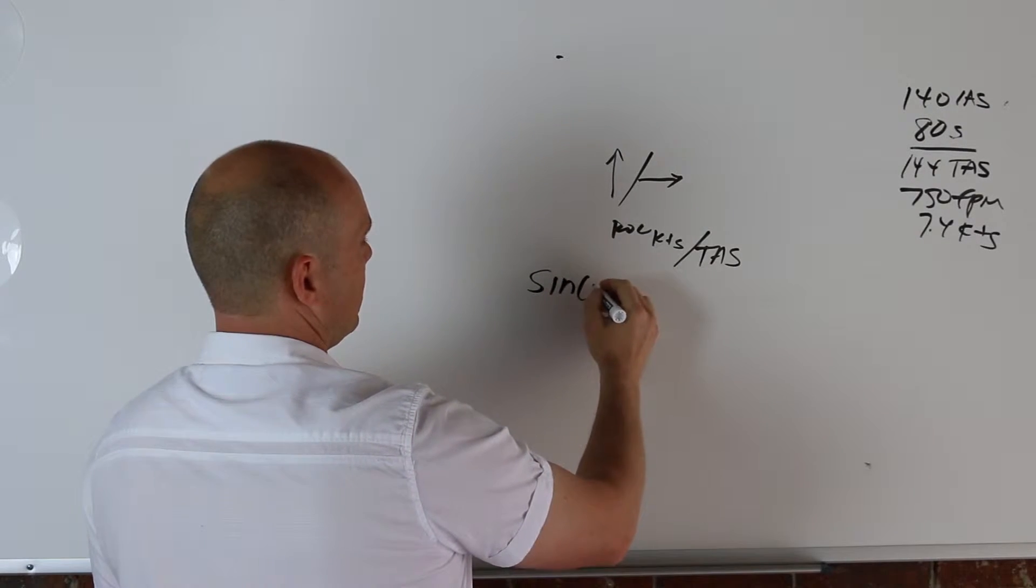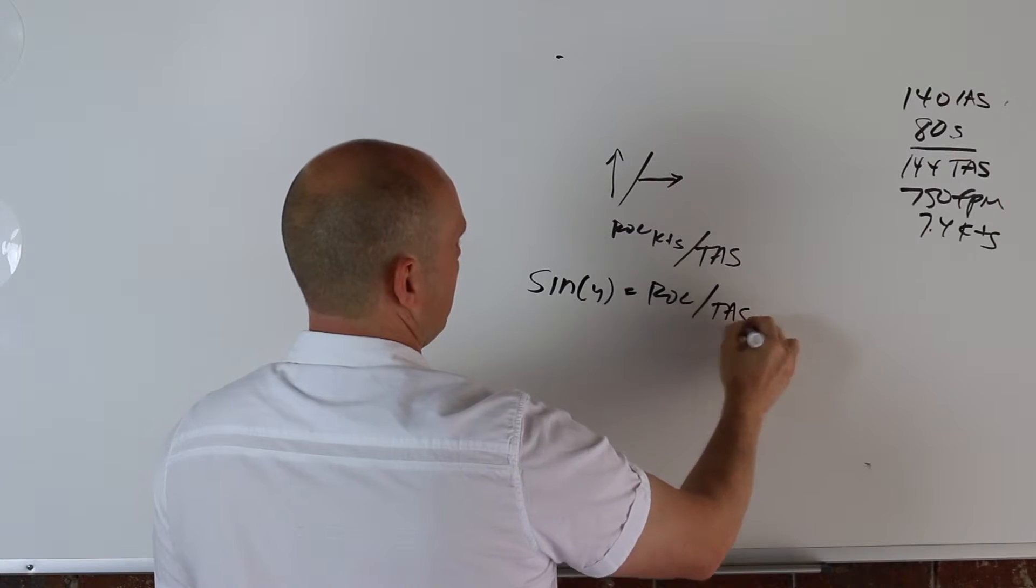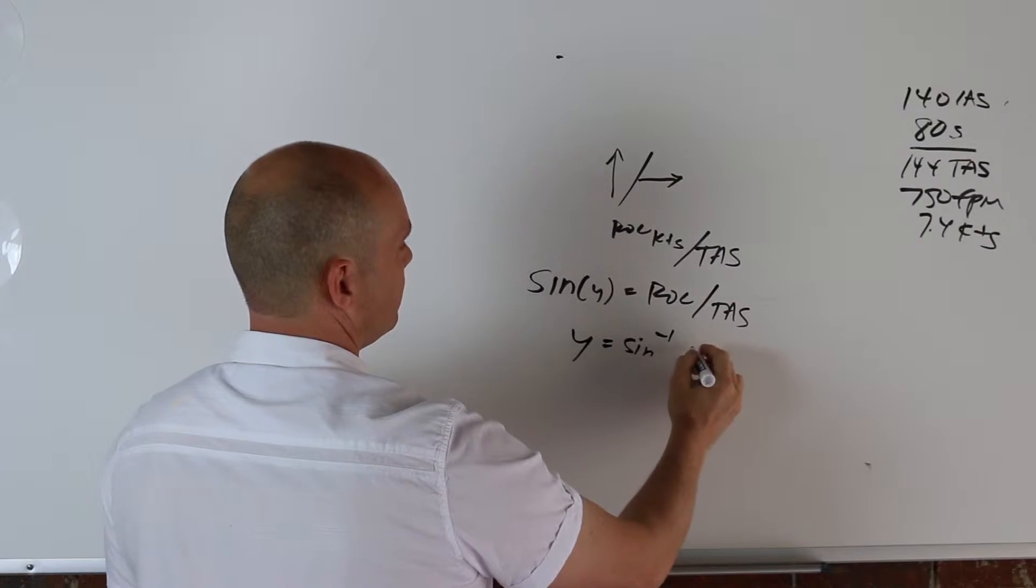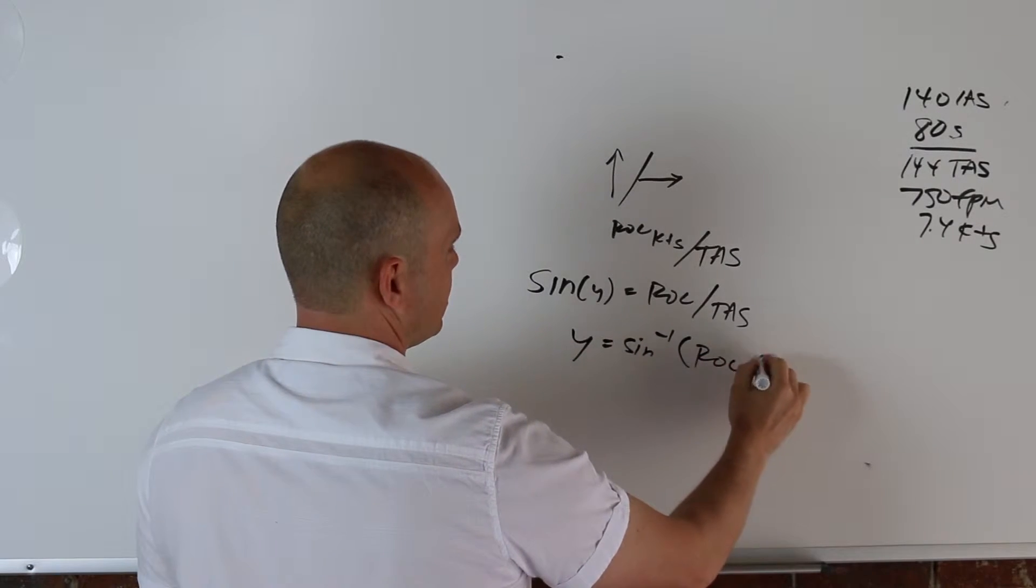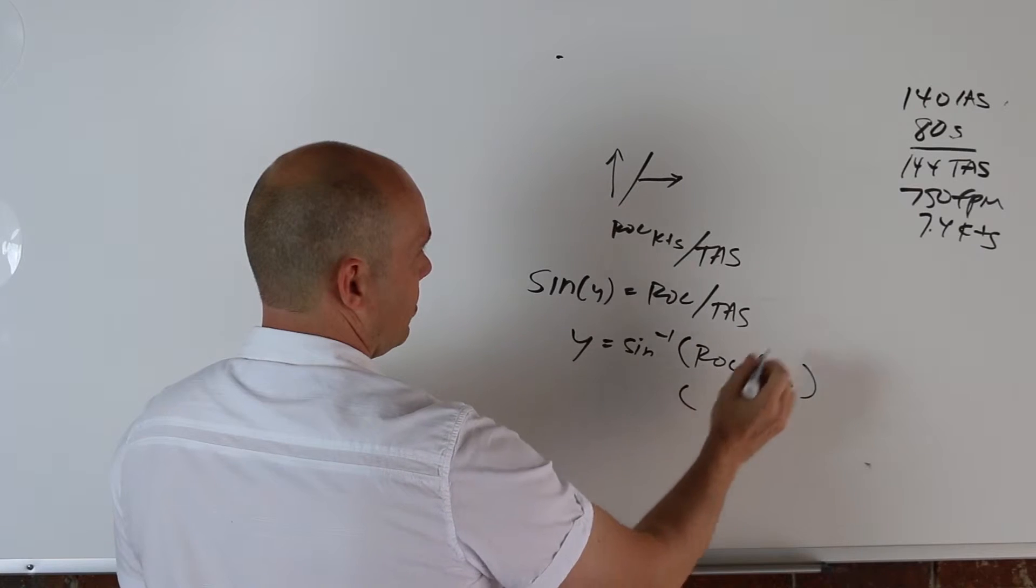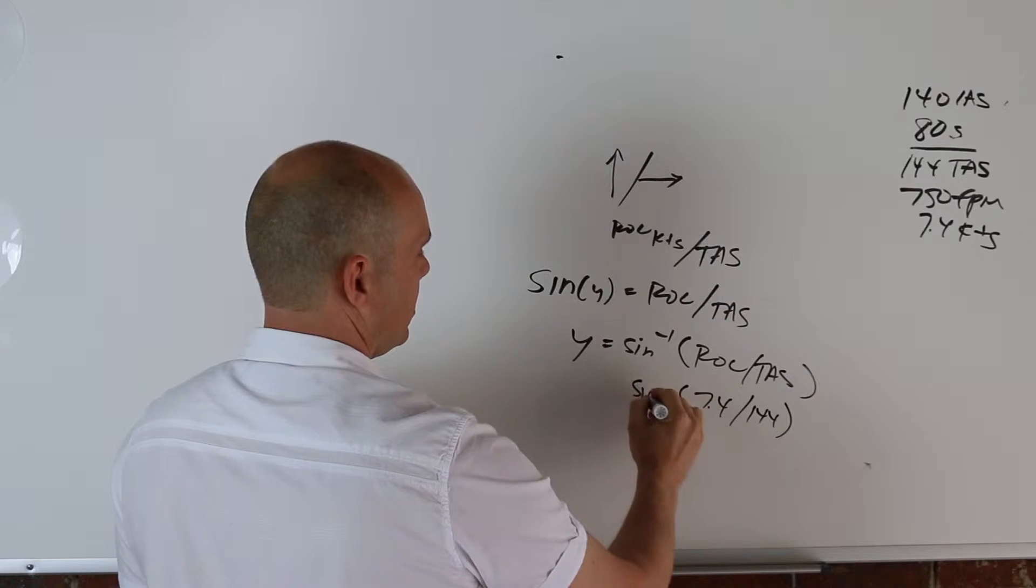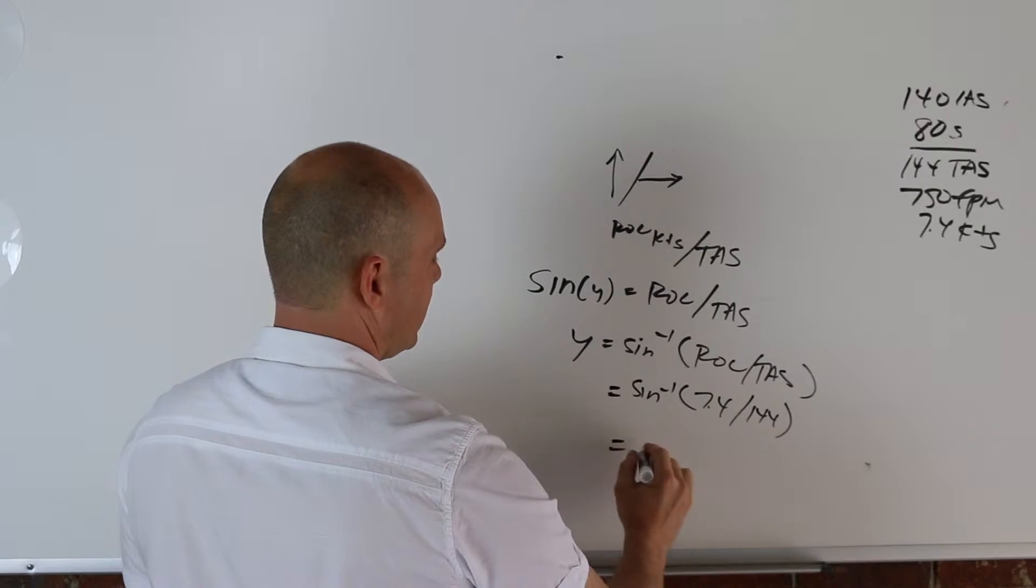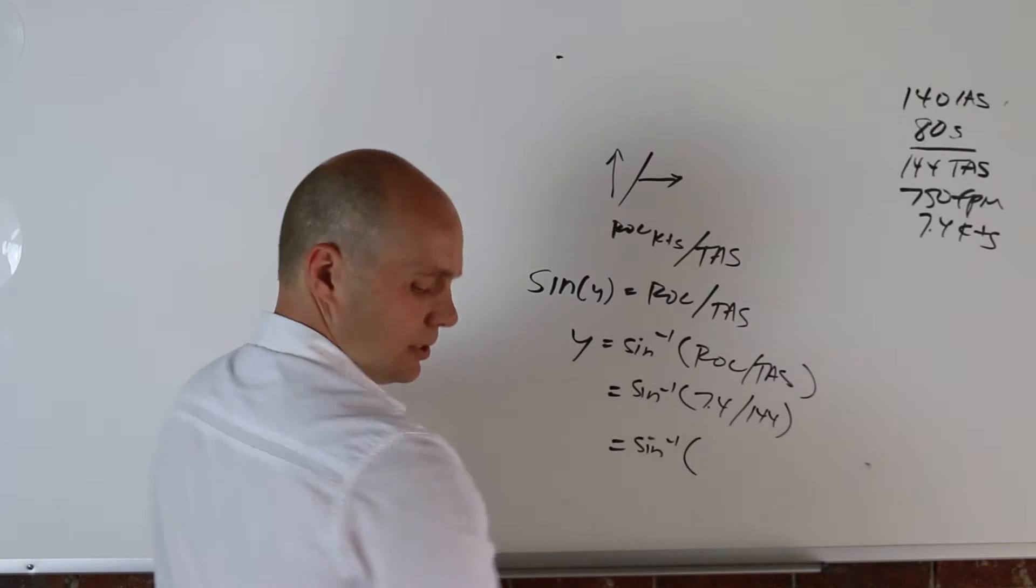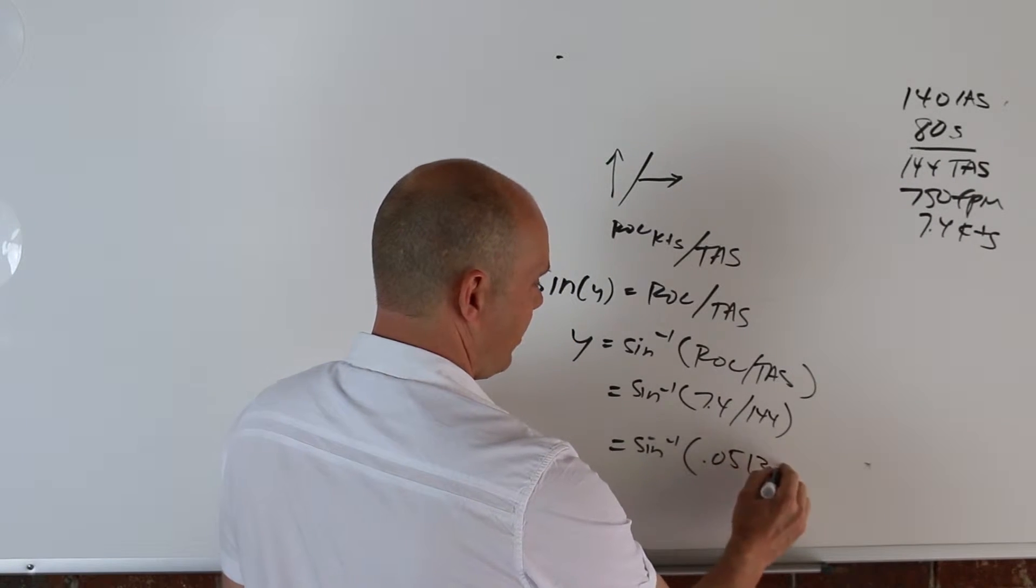So obviously to solve for the angle, move sine to the other side. So it's sine inverse times your rate of climb in knots divided by true airspeed. And then that right here, you fill this in. Again, this is 7.4 divided by 144. And that works out to be 0.05138.